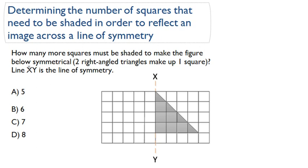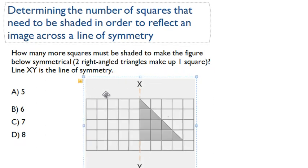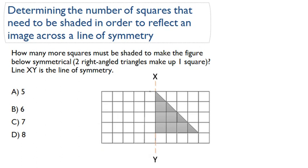Okay, so in this question it asks: how many more squares must be shaded to make the figure below symmetrical? And we're told that two right-angled triangles—these right-angled triangles here—make up one square. So this is half a square. Line XY is the line of symmetry.